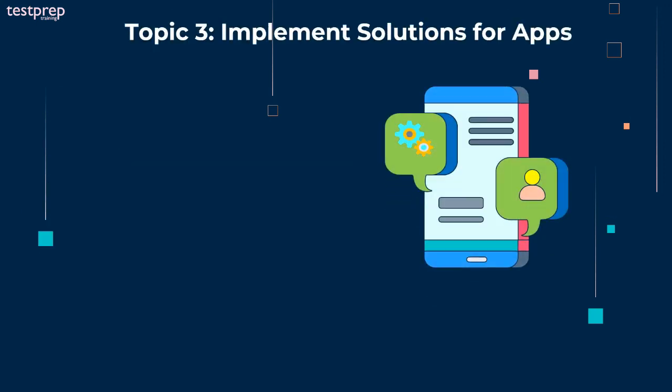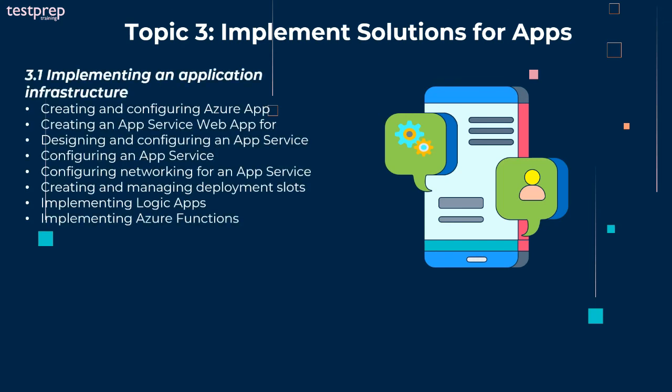Domain 3: implement solutions for apps, understood in two parts. First, implementing an application infrastructure, divided into eight parts: creating and configuring Azure App, creating an app service web app, designing and configuring an app service plan, configuring an app service, configuring networking for an app service, creating and managing deployment slots, implementing logic apps, and implementing Azure functions.